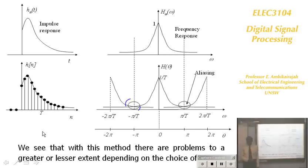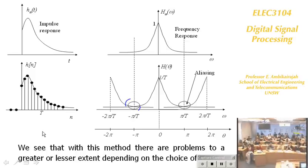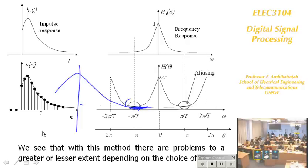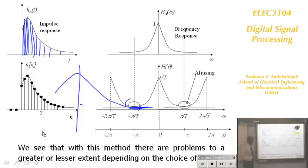To avoid aliasing, you need a higher sampling frequency. Move the sampling frequency far away, and there will be very little overlap. This technique is very simple and effective, as long as you use a higher sampling frequency. The sampling frequency affects the frequency response when using impulse invariance transformation, and a sufficiently high sampling frequency is necessary to avoid aliasing.